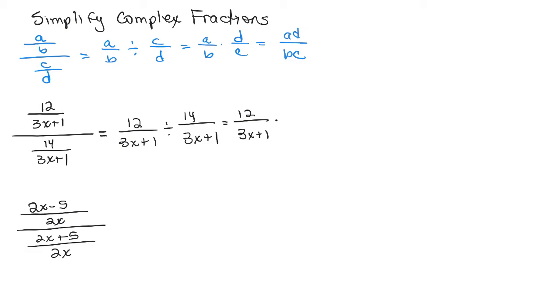Remember, it's the number after the division sign that you do the reciprocal. So we just switch the numerator and denominator. So we have times 3X plus 1 over 14.